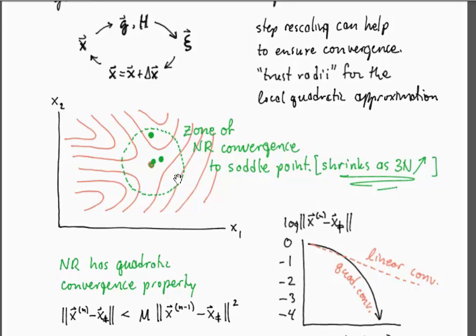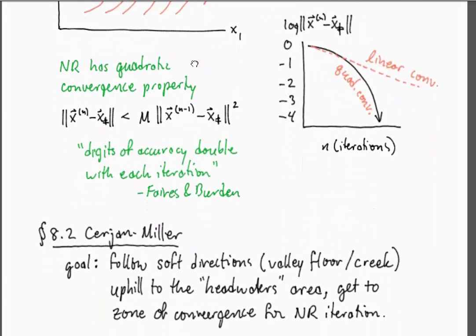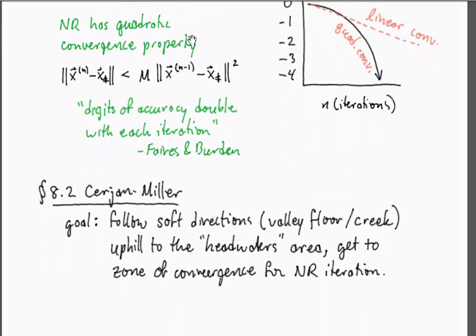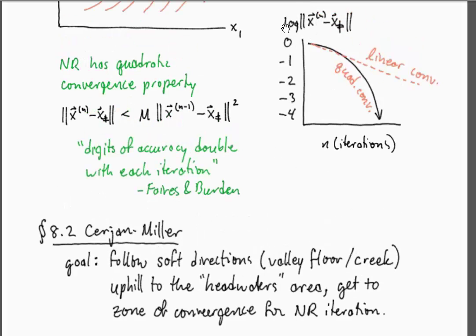Newton-Raphson, if you can start out close enough, converges quite quickly. It has a quadratic convergence property, and that basically means that the digits of accuracy double with each iteration of the algorithm. If you plotted the log of the distance from the actual saddle versus the number of iterations, you would see something dropping faster than a line. This quadratic convergence looks like that.